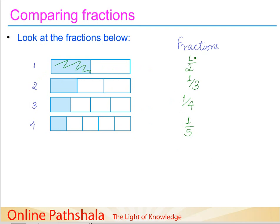When we consider one part out of two parts, it is visually straightforward that considering one part out of a larger number of parts gives a smaller value. The bigger the denominator in a fraction, the more parts the whole has been divided into, and when you consider one part out of so many parts, that one part will definitely be smaller. In this way we can figure out which fraction is greater.